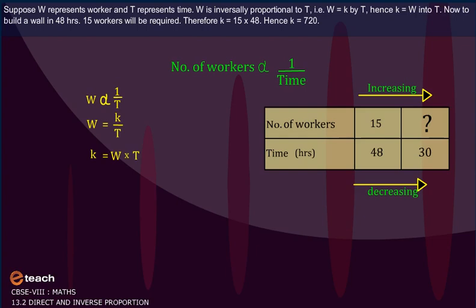Now, to build a wall in 48 hours, 15 workers will be required. Therefore, k is equal to 15 into 48. Hence, k is equal to 720.